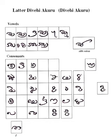The ancient form, Evela, can be seen in the Lomafanu of the 12th and 13th centuries and in inscriptions on coral stone, Harigaha, dating back from the Maldive Buddhist period.